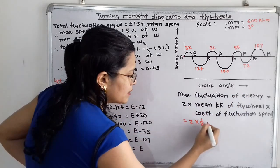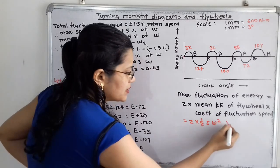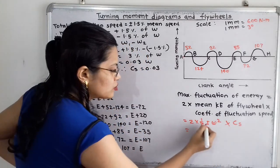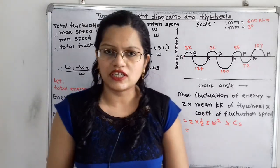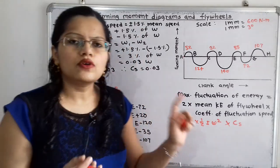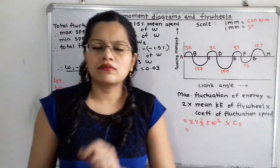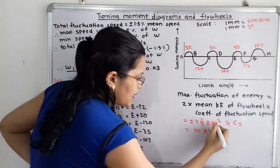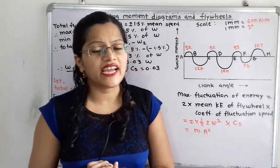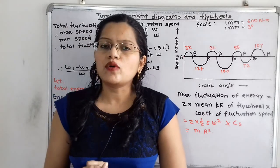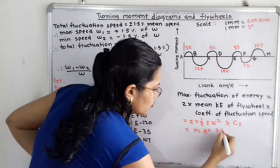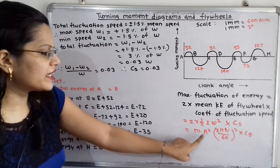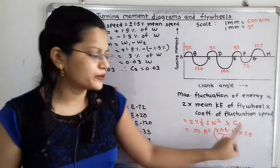Solving the right-hand side: 2 × ½ × I × ω² × Cs — the 2 and ½ cancel. The mass moment of inertia I = mr², since the radius of the flywheel is given. So the expression becomes m × r² × ω² × Cs. Since N is given, omega is calculated as 2πN/60. So r, N are known; now we need Cs and mass m.